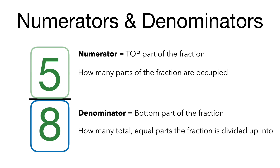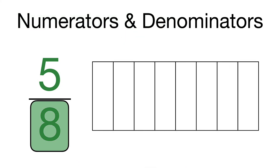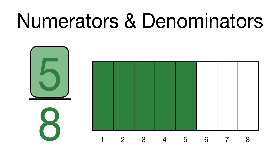Let's look at a visual representation of the fraction 5/8. The 8, the denominator, represents there are going to be 8 equally split up parts of this fraction. If we count that out, there are 8 even sections. The 5, the numerator, means 5 of these 8 spots are filled in.